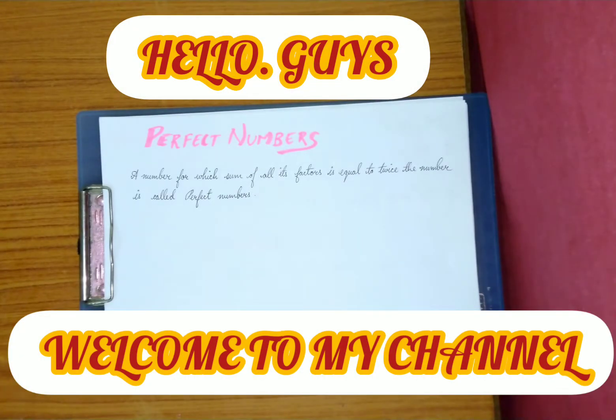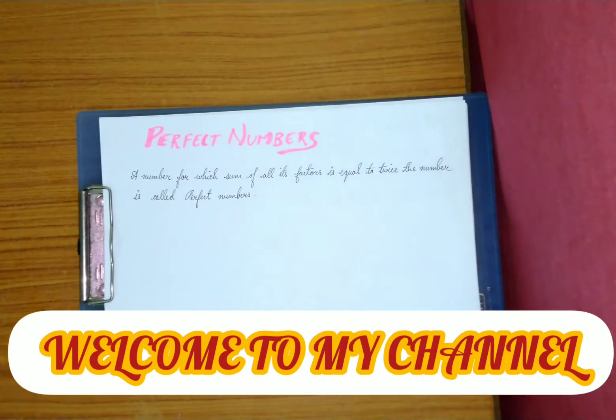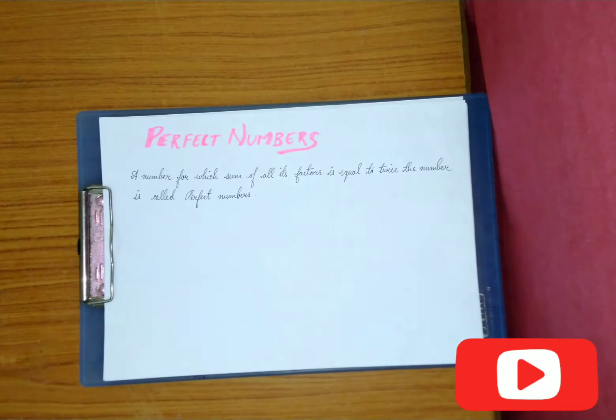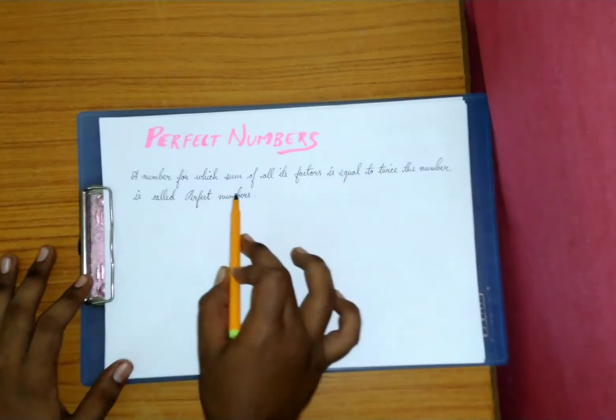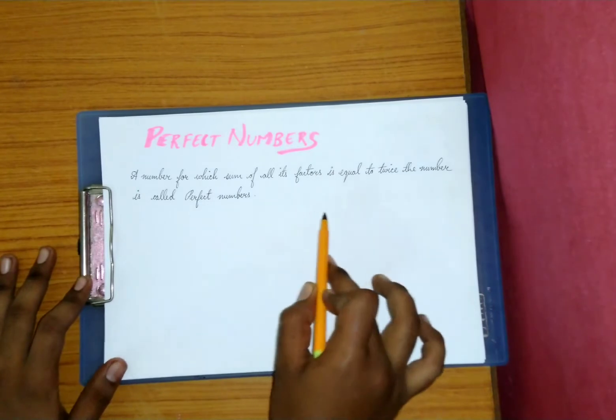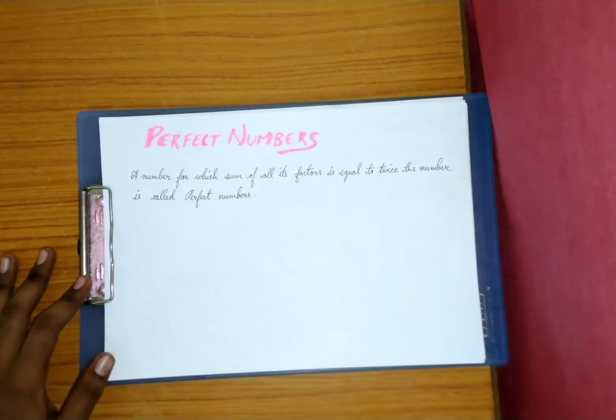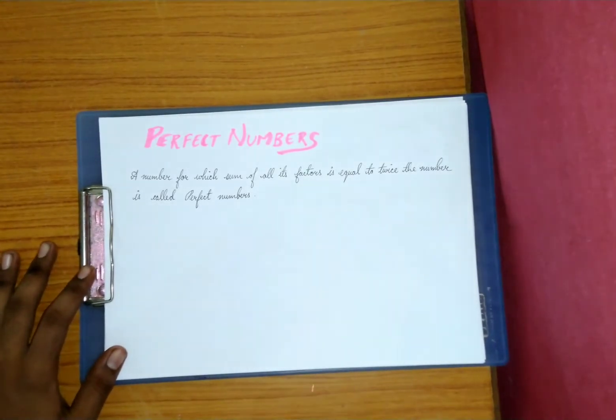Hello guys, in this video we are going to discuss a small topic that is perfect numbers. So what do you understand by the word perfect numbers? Basically, a number for which sum of all its factors is equal to twice the number is called perfect number. So we'll take up some examples.